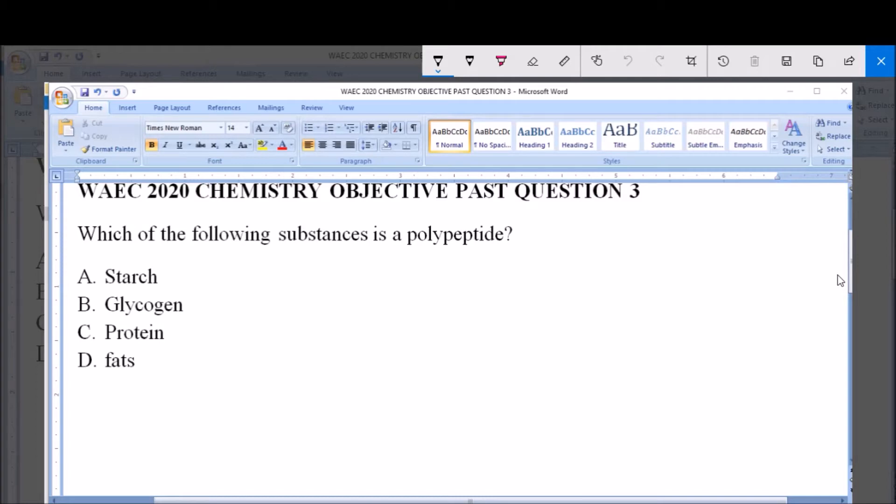A. Starch. B. Glycogen. C. Protein. D. Fats. So what you are looking at here is polypeptide.